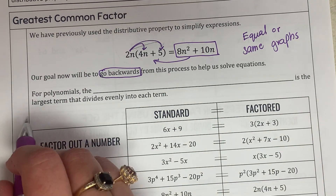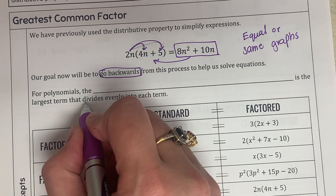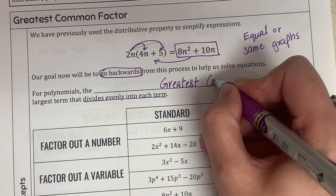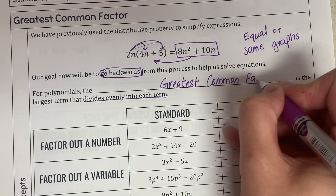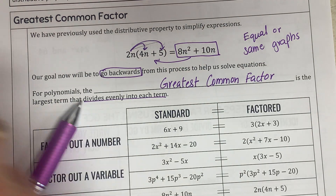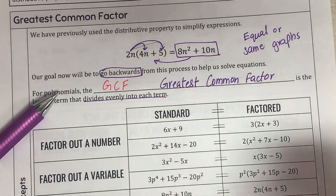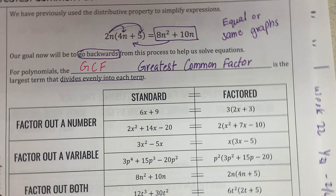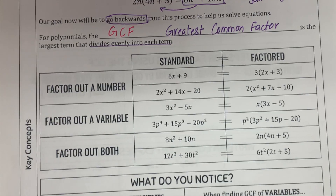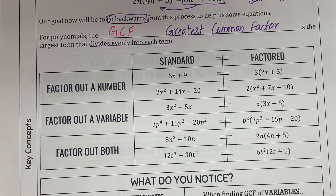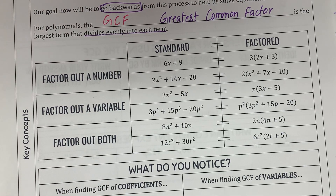For polynomials, the GCF is the largest term that divides evenly into each term — the Greatest Common Factor. Here are some examples of standard form and factored form that we are going to look into. They're not that difficult and they have a whole process behind them.